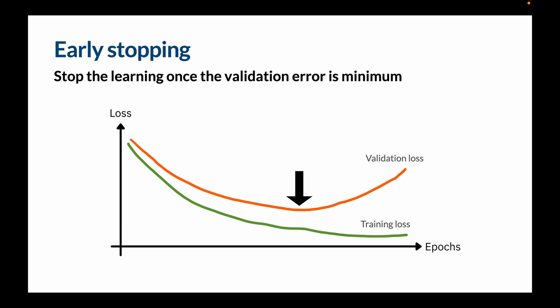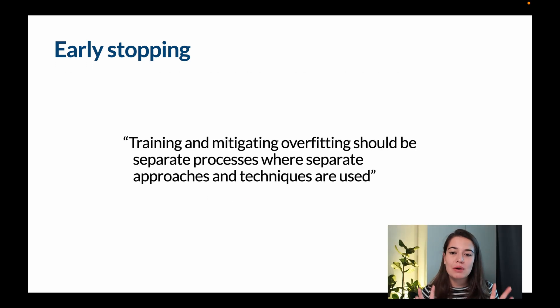Though I have to say this is kind of a controversial technique. Not everyone agrees that this is a good way of dealing with overfitting. Because what we want to do is we want to train our model, make sure that it converges to a solution, and then have a separate process on top of it to deal with overfitting, rather than stopping training early. Because combining these two processes, namely training and mitigating overfitting, will cause further confusion down the line.